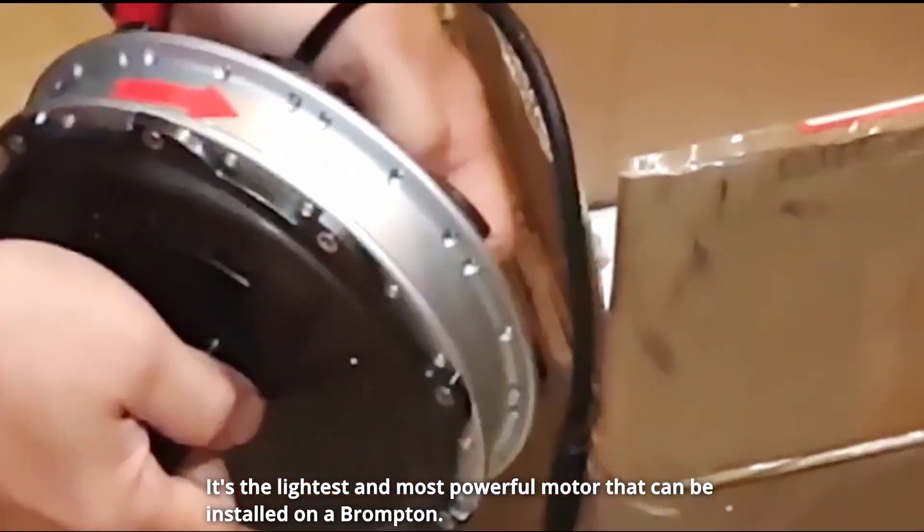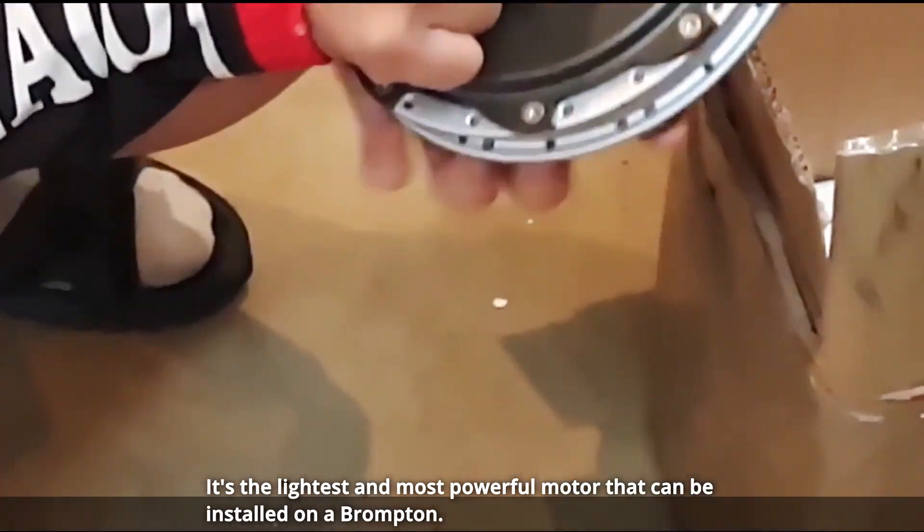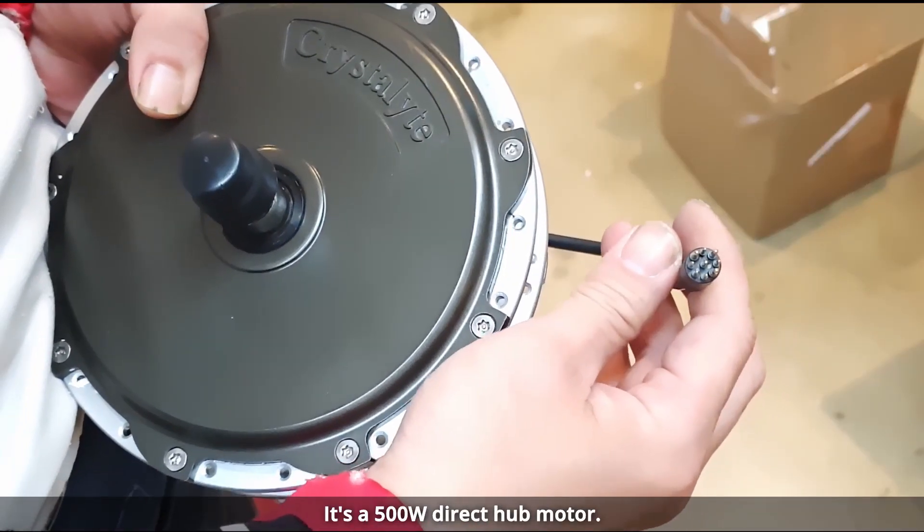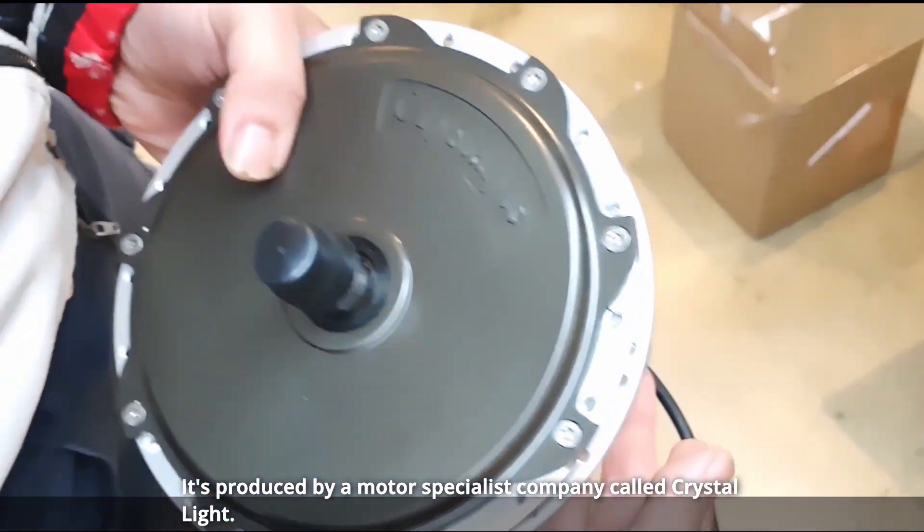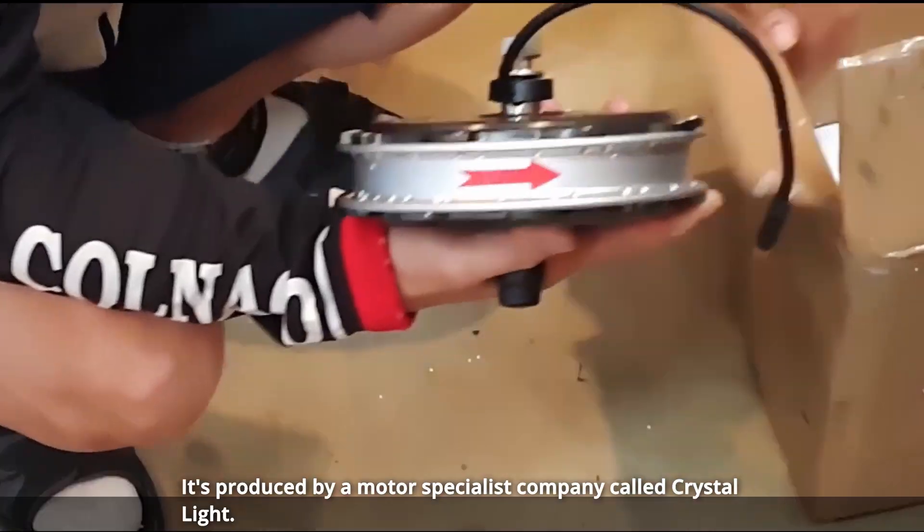It's the lightest and most powerful motor that can be installed on a Brompton. It's unbeatable. It's a 500 watt direct hub motor produced by a motor specialist company called Crystal Light.